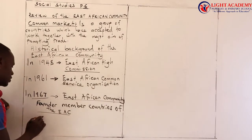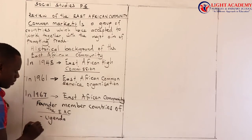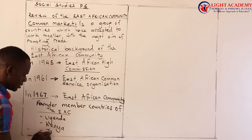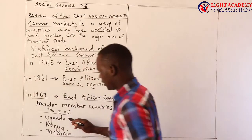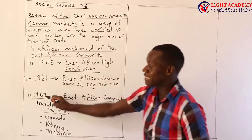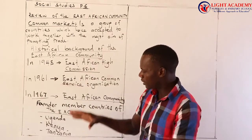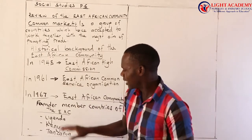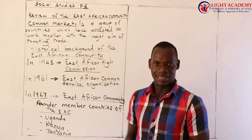These were the founder member countries of the East African Community. Let's begin with our mother country — Uganda. Then we go to Kenya and Tanzania. These were the founder member countries of the East African Community by 1967: Uganda, Kenya and Tanzania.